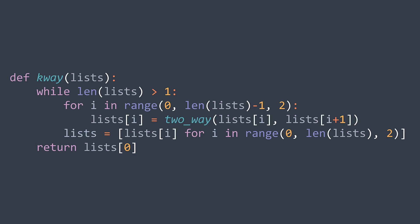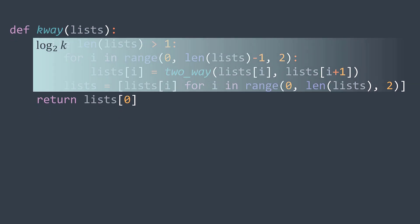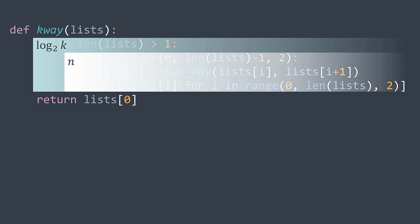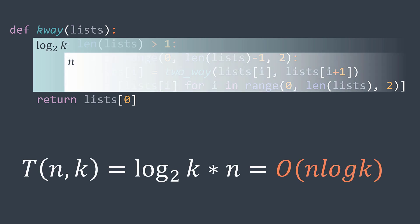For the time complexity, we have k lists and we're dividing the number of lists by two at each iteration, so we have log(k) iterations for the outer loop. The cost of one iteration is O(n) because we're traversing all the elements. We get a time complexity of O(n log k).